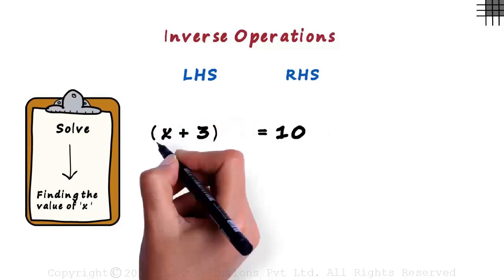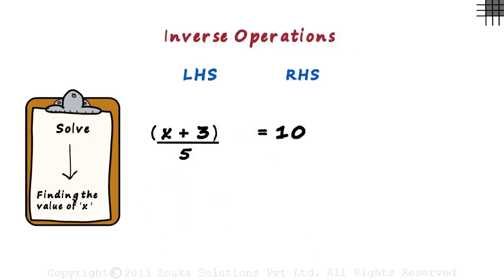And if we divide the left-hand side by the number, we also divide the right-hand side by the same number. Note that 5 was a random number. This concept is the crux of the inverse operations method. Just remember this concept.